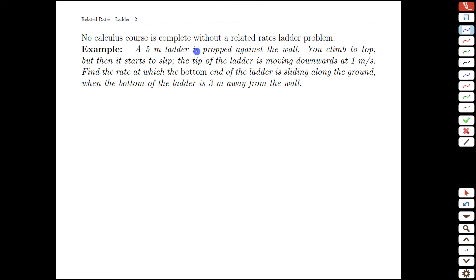The example here is a classic of calculus classes around the world, and that's a problem with a ladder. So imagine a ladder is poised up against a wall, and that ladder is exactly five meters long. You climb up to the top of that ladder, then unfortunately, because it wasn't well anchored at the bottom, it's going to start to slip downwards. And it starts to slip downwards with the tip moving at one meter per second down. Our goal is to find the related rate, which is how quickly the bottom end of the ladder is sliding across the ground at some particular instant when the ladder reaches three meters down.